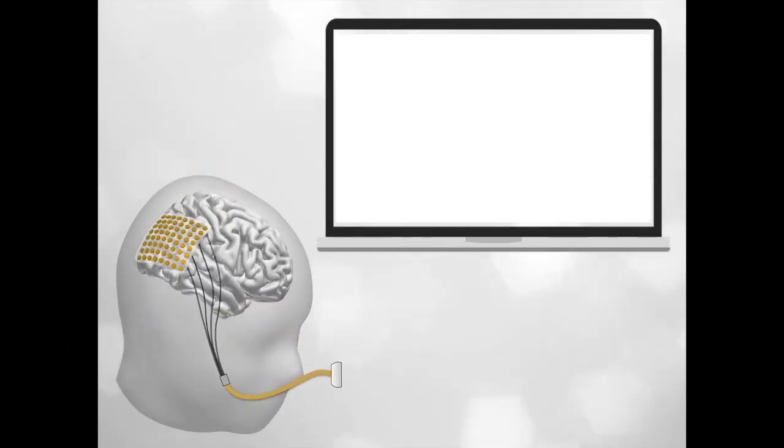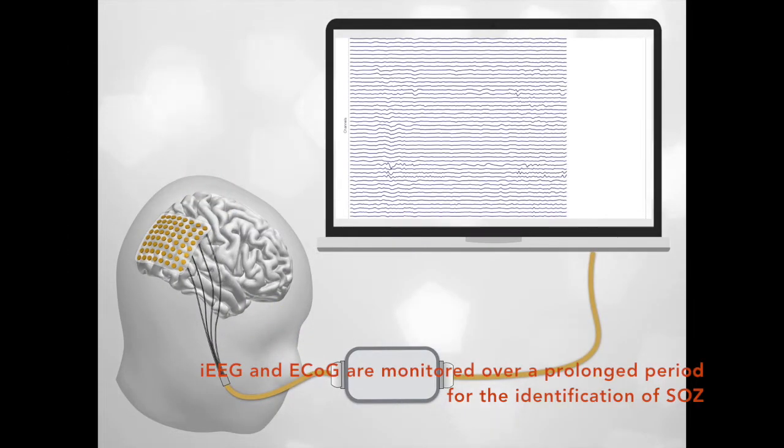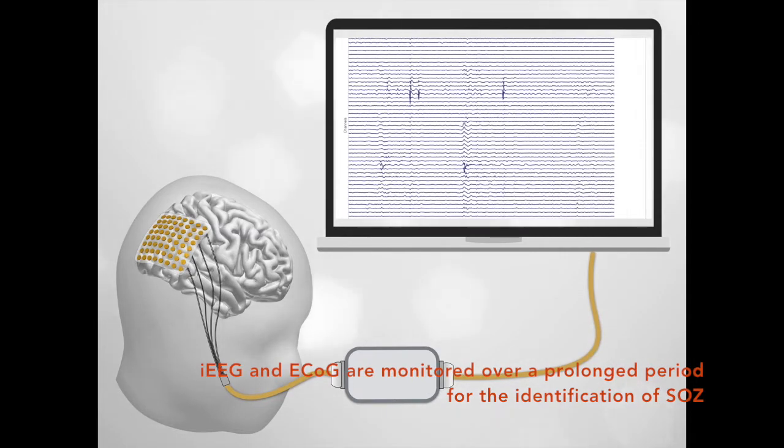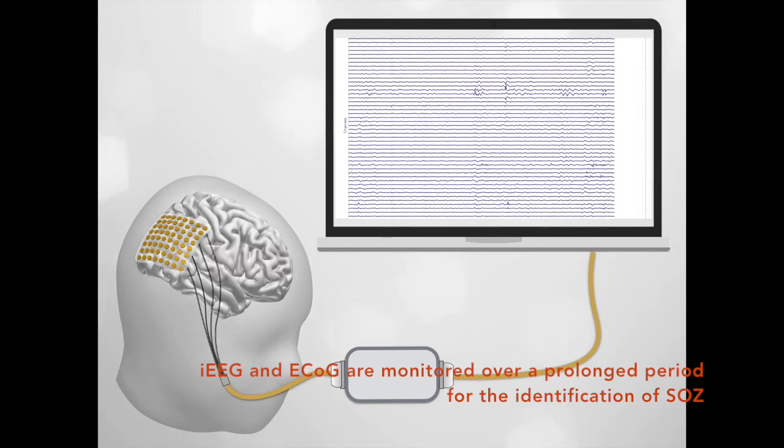To accurately locate the epileptogenic region, intracranial EEG is recorded in the epilepsy monitoring unit over days where multiple stereotypical clinical seizures are recorded to provide information about the seizure onset zone.